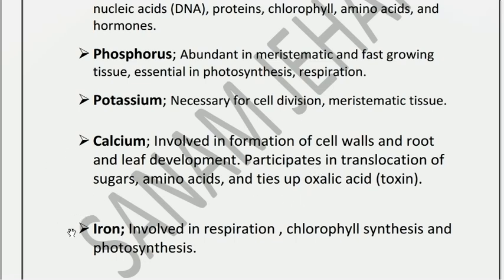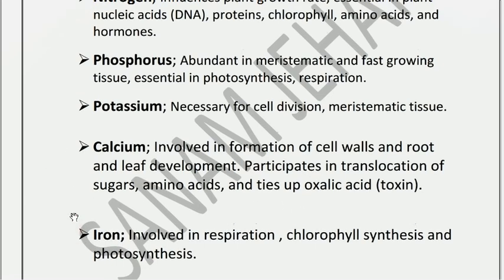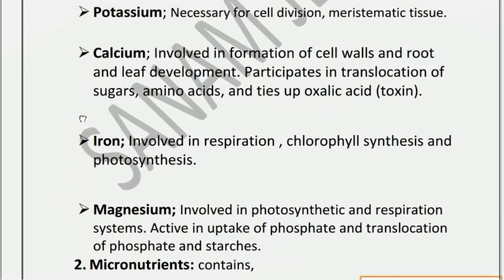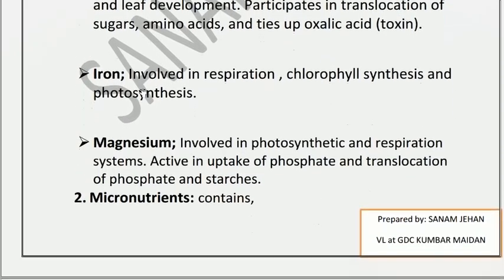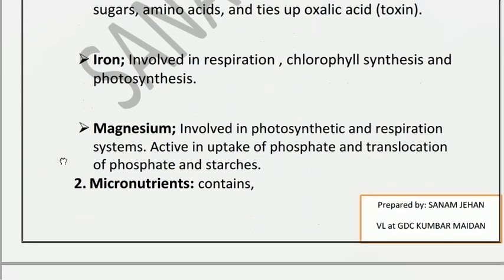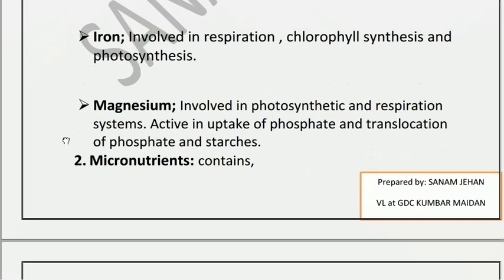Iron is involved in respiration, chlorophyll synthesis, and photosynthesis. Magnesium is involved in the photosynthetic and respiration system. It is part of the chlorophyll structure, and magnesium is available in the pyrrole rings of chlorophyll.